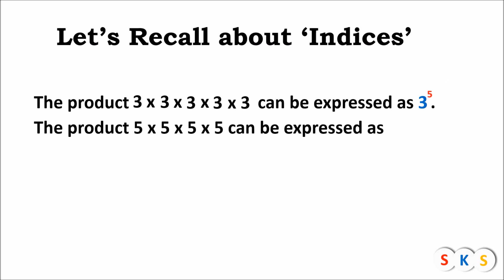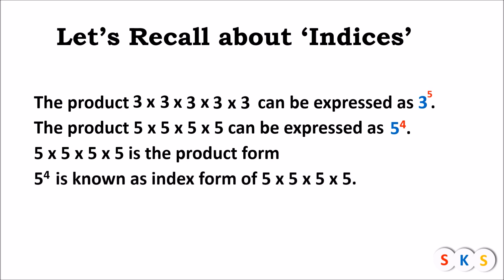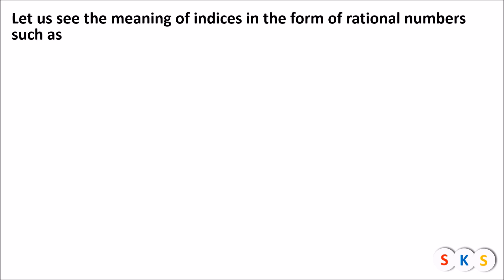The product 5 × 5 × 5 × 5 can be expressed as 5 raised to 4. You can see that 5 appears 4 times in the multiplication, that's why there is a 4 just above the 5. The expression 5 × 5 × 5 × 5 is known as product form, whereas 5 raised to 4 is known as index form. Here, 5 is known as the base and 4 is known as the index or power.